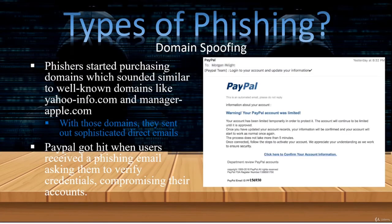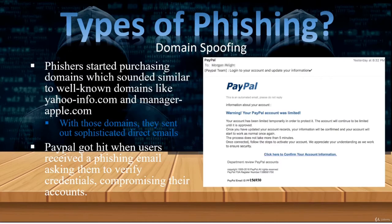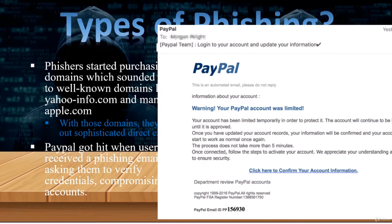Domain phishing is successful because the emails look really authentic. Cybercriminals use logos and wording common to the organization they are pretending to be. Even if you click on the link, you're likely to end up at a fake yet authentic-looking website. In the example, you see an actual phishing email from PayPal that was usually enough to get a person to click. Ask yourself: do I even have a PayPal account? And always go directly to PayPal.com to verify any claim.